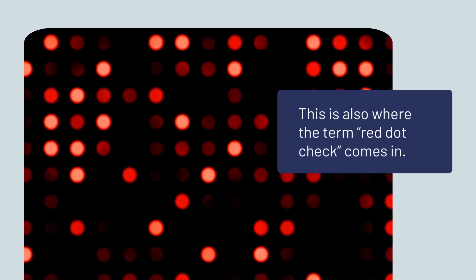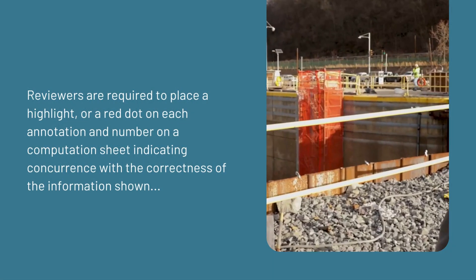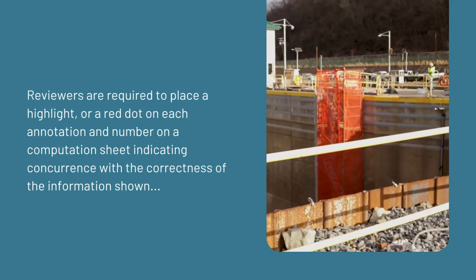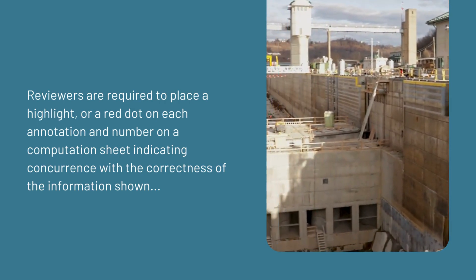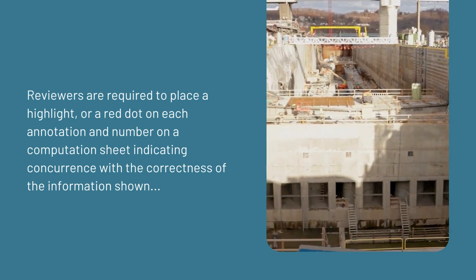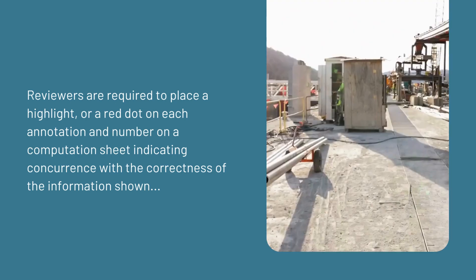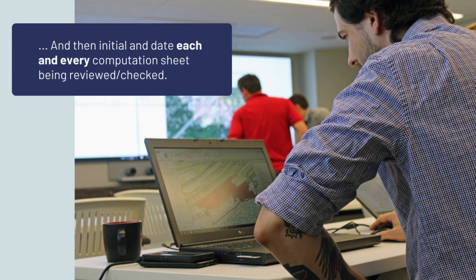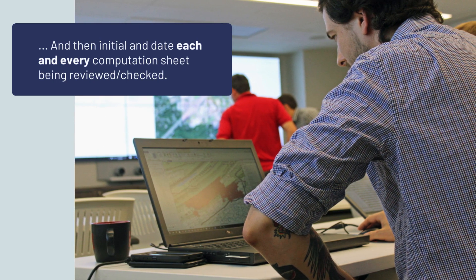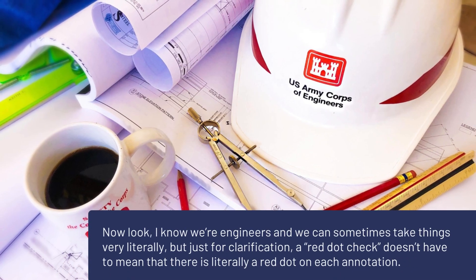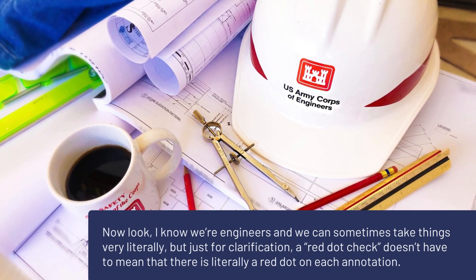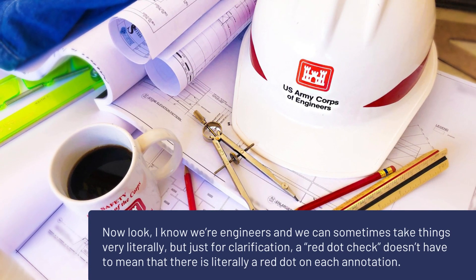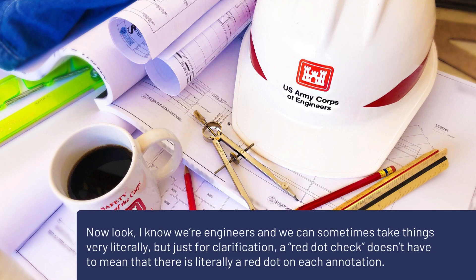This is also where the term red dot check comes in. Reviewers are required to place a highlight or a red dot on each annotation and number on a computation sheet, indicating concurrence with the correctness of the information shown. And then initial and date each and every computation sheet being reviewed or checked. Now, a red dot check doesn't have to mean that there is literally a red dot on each annotation.